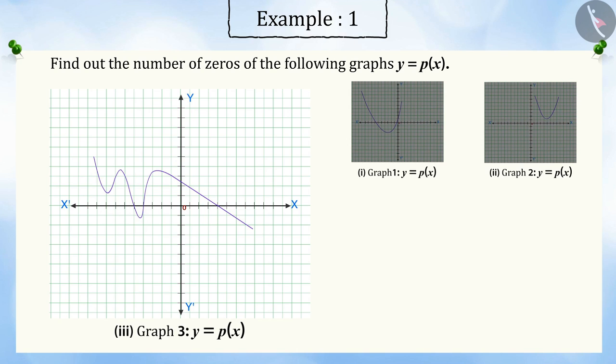In this third graph, you can see that it cuts the x-axis three times. Hence, the number of zeros will be three in this case.